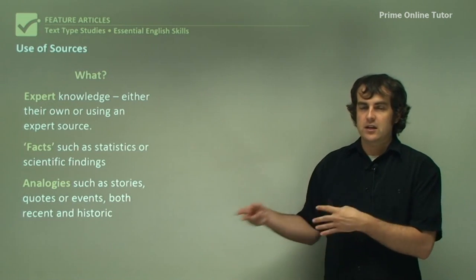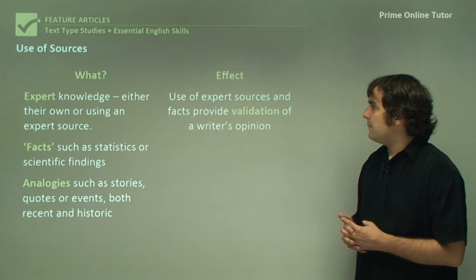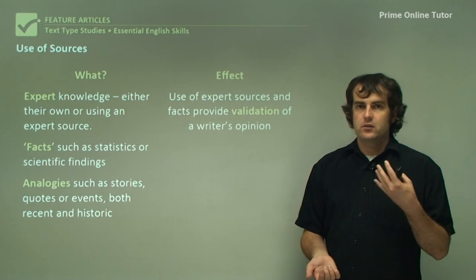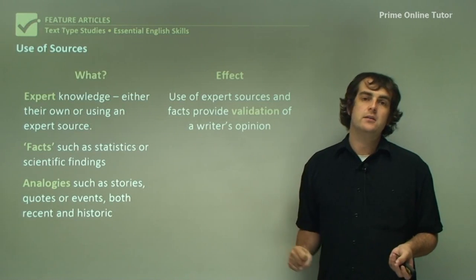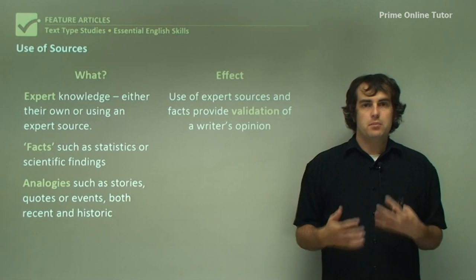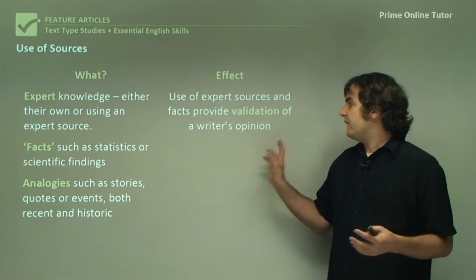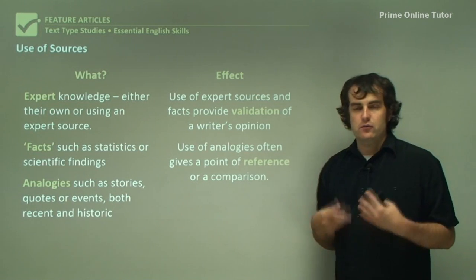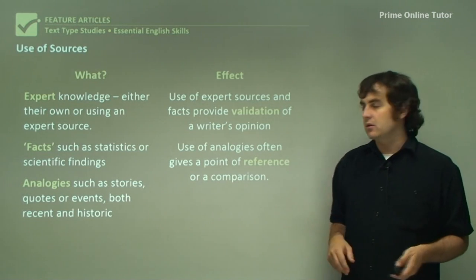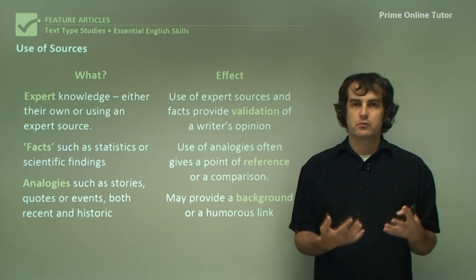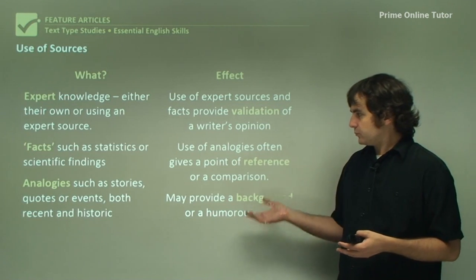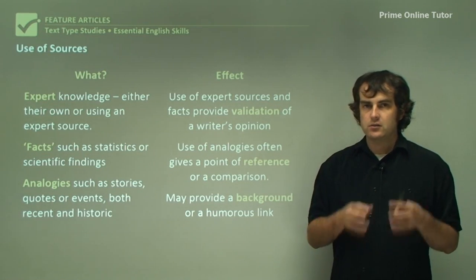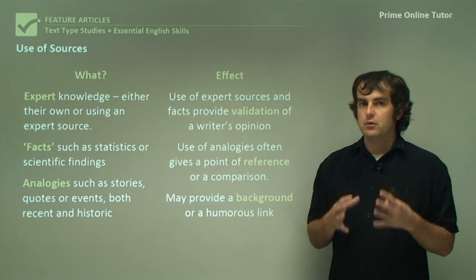The effect of using expert sources is that it provides validation of the writer's opinion. If readers get the impression the writer knows what they're talking about — for instance, a sports column written by an athlete — then the opinion is validated as current and relevant. Using analogies gives a point of reference or comparison. Together, all these sources make the opinion valid, give a point of reference, and make the article interesting and informative.